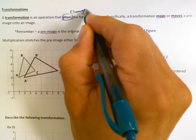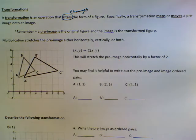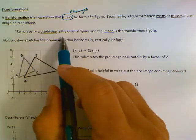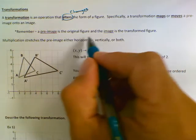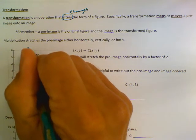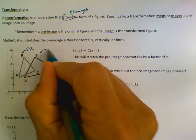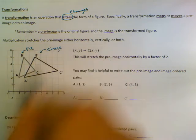It alters or changes the form of a figure. Specifically, a transformation maps or moves a pre-image onto an image. In this case the image and the pre-image do not actually have to be the same. Remember, the pre-image is the original without the apostrophes. So this is the pre-image, and then the image is the transformed figure after it's been transformed.